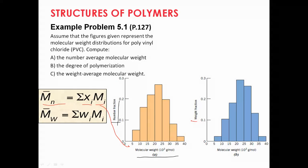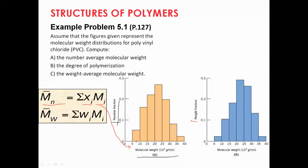Now let's look at this distribution found from a PVC material. On the horizontal axis, the molecular weight has been divided into ranges. The first one is 5,000 to 10,000 gram per mole, so the average is 7.5. The next one is 10 to 15, average 12.5, then 17.5, 22.5, 27.5, 32.5, and finally 37.5 — all times 1,000 gram per mole.